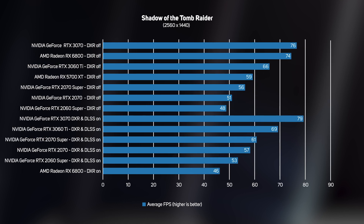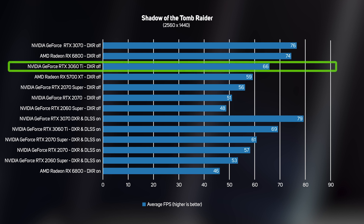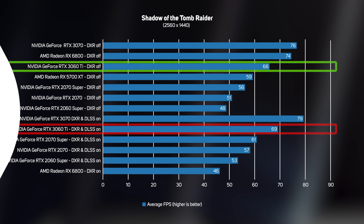We then upped the work for the graphics card by increasing the resolution to 1440p. The RTX 3060 Ti still achieves a smooth frame rate at this higher resolution, with an average frame rate of 66 frames per second. Turning on DXR with DLSS increased the frame rate to 69 frames per second and made the game look even better, so it's well worth doing.